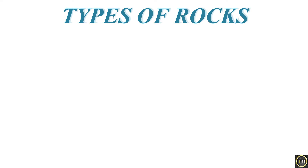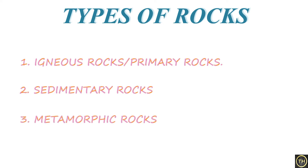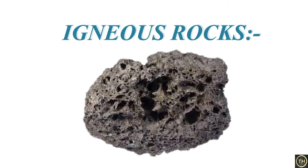There are three types of rocks, which are based on their formation — that is, the way they are made. First is igneous rocks, also called primary rocks. Second is sedimentary rocks. Third is metamorphic rocks. When molten material known as magma within the crust, and lava on the surface, cools down and solidifies, it gives rise to igneous rocks. Since these rocks are formed from material from the interior of the Earth, they are also referred to as primary rocks.